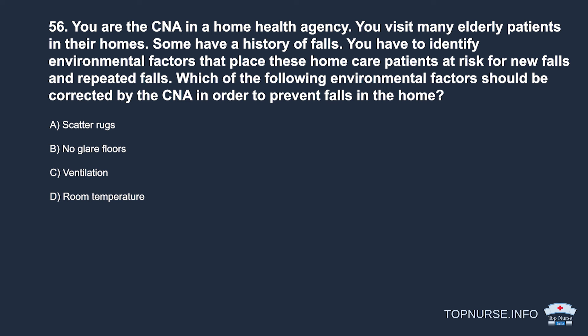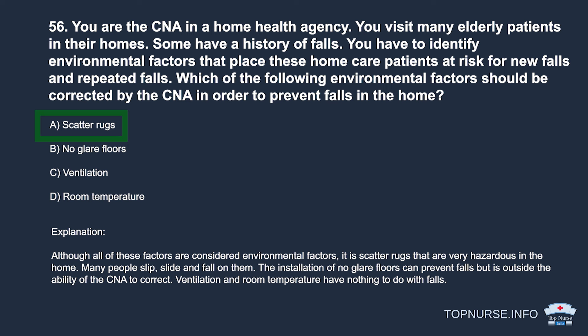Question 56: You are a CNA in a home health agency visiting elderly patients with a history of falls. Which environmental factor should be corrected to prevent falls? a. Scatter rugs. b. No-glare floors. c. Ventilation. d. Room temperature. Correct answer: a. Scatter rugs. Scatter rugs are very hazardous — many people slip and fall on them. Installing no-glare floors can prevent falls but is outside the CNA's ability to correct. Ventilation and room temperature have nothing to do with falls.